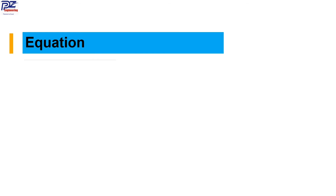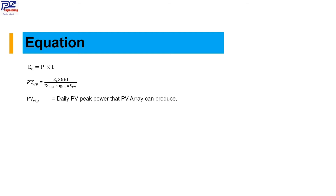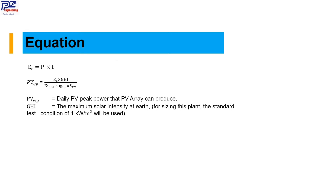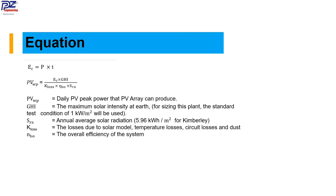Now we can go to our equations. Energy consumption is equal to power times time. For PV array sizing, we use energy consumption, solar irradiation, and losses. The PV peak is the daily peak the array can produce. We use maximum solar intensity of 1 kilowatt per meter square under standard conditions, with an annual average solar radiation of 5.9 hours — which depends on the area — and system losses.